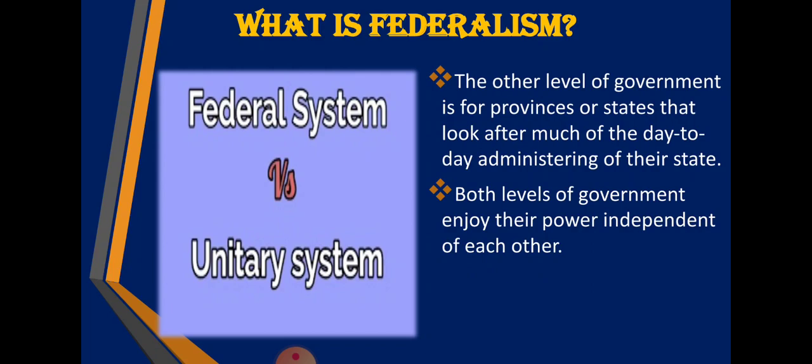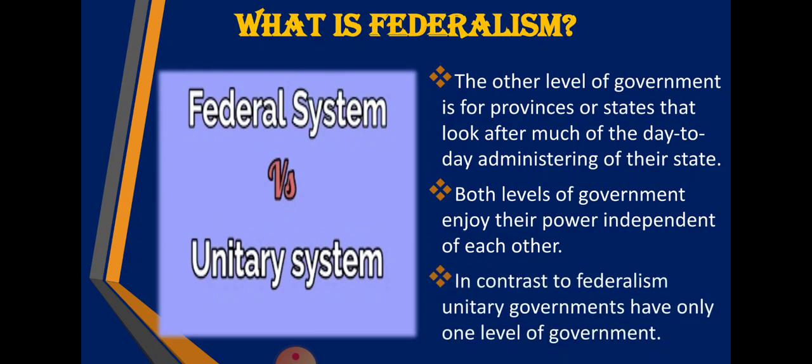Both levels of government enjoy their powers independent of each other. The governments that have been given powers over their respective subjects can make laws and handle them as they see fit. They don't interfere in each other's work - the central government and state government each make laws within their own jurisdiction and take necessary steps. In contrast, unitary governments have only one level of government, where only the central government exists with all the powers.